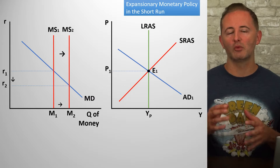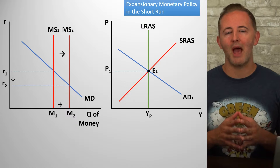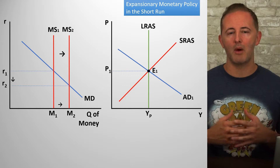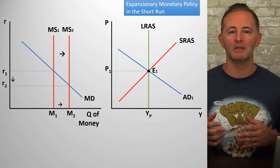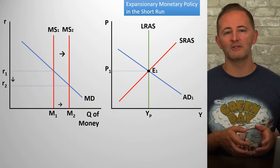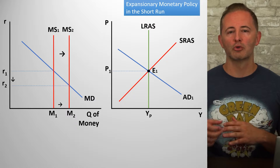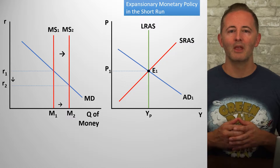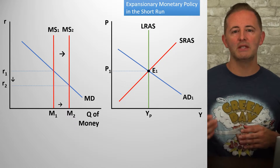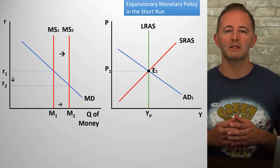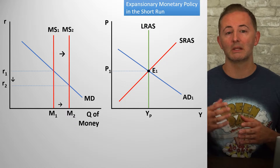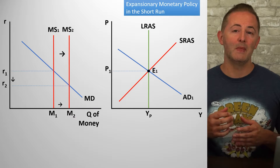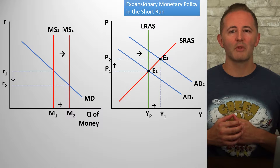Starting from long-run equilibrium, let's see what happens when expansionary monetary policy is implemented. The money supply curve shifts to the right, reducing the nominal interest rate. This increases investment and consumer spending — borrowers like the lower interest rates — and this shifts the AD curve to the right.